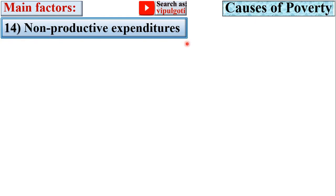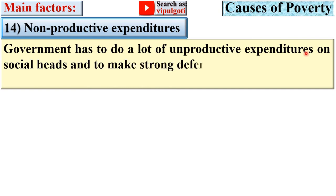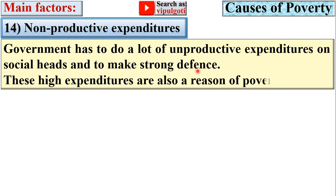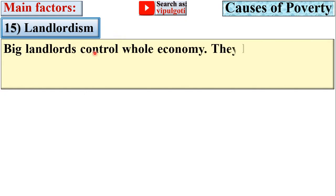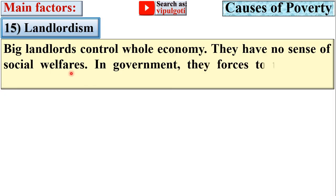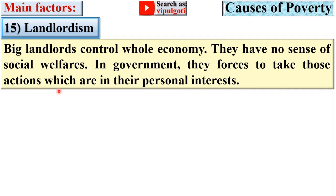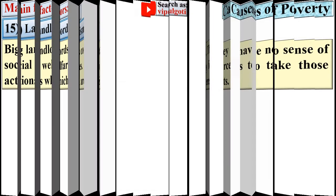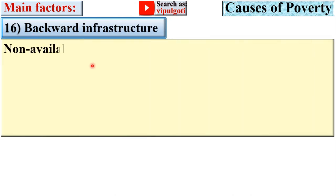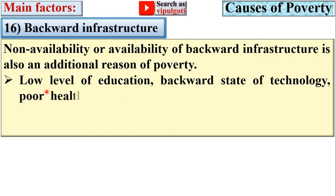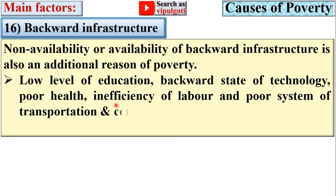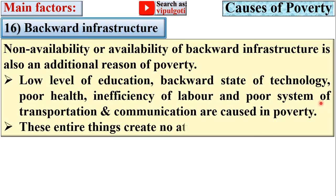Next, non-productive expenditures. The government has to do a lot of unproductive expenditures on social heads and to maintain a strong defense. Next, landlordism. Big landlords control the whole economy and have no sense of social welfare. In government, they force others to take actions which are in their own interest. Next, backward infrastructure. Non-availability or availability of backward infrastructure is also a reason for poverty. Low level of education, backward state of technology, poor health, inefficiency of labor, and poor systems of transportation and communication are causes of poverty.